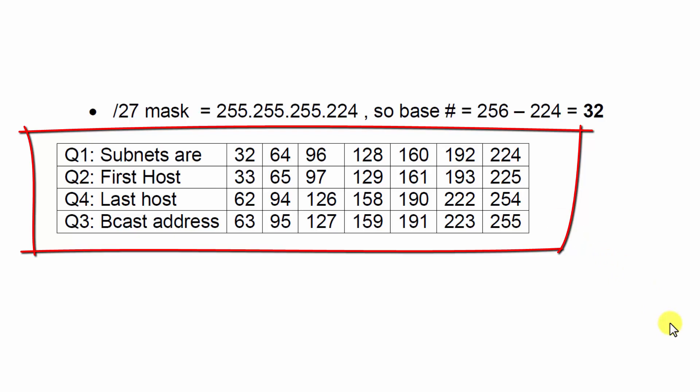The first host is simply the next number following the host address. So, you can see in this subnet of 32, the first host is 33, and in the subnet of 64, the first host is 65, and so on.